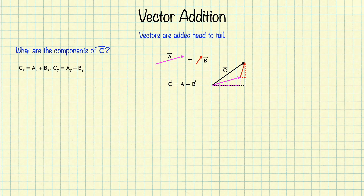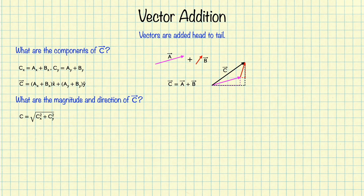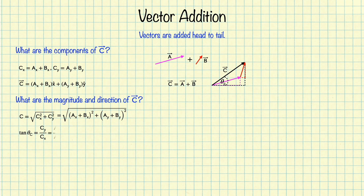Writing this in vector notation, we get that vector c equals ax plus bx times x hat plus ay plus by times y hat. Now, the magnitude of c, by the Pythagorean theorem, is the square root of cx squared plus cy squared. We just found what cx and cy are, so we can just plug that in. If we were working in three dimensions, we would add under the square root plus the square of az plus bz. This expression is sometimes referred to as the distance formula, because it gives you the distance from the starting point to the final point. To get the direction of c, we define an angle theta sub c as a counterclockwise rotation from the positive x direction, and the tangent of this angle equals cy over cx.